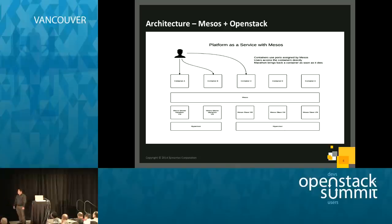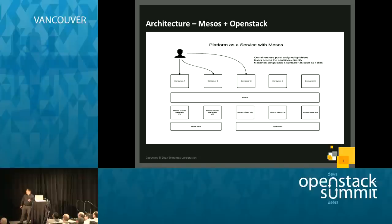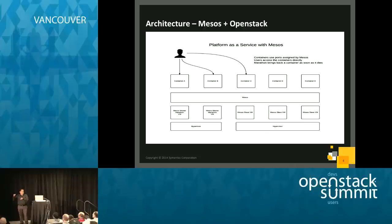The way Mesos works is you have your master and then frameworks. A framework is a way of interacting with the cluster. Two popular frameworks are Aurora, used by Twitter, and Marathon, used by Mesosphere. They take care of executing whatever task you tell them — container or not — constantly. If it dies, they bring it back, regardless of which node it's on.